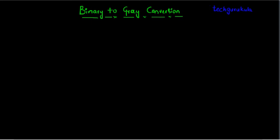In this video we are going to see binary to gray conversion. So if you are given a binary code, how do we get its corresponding gray code?